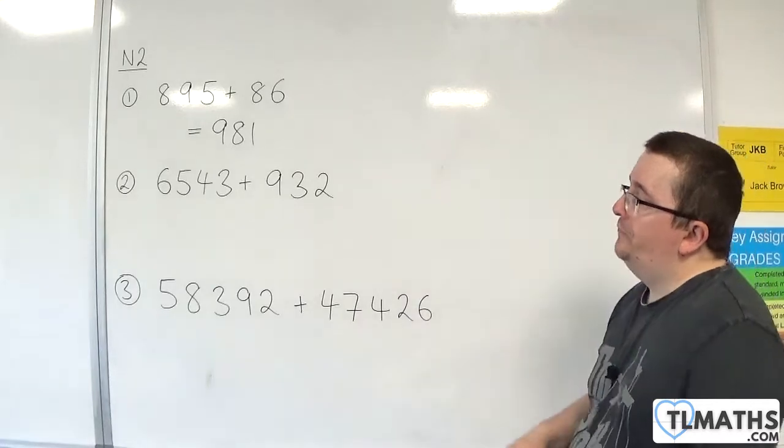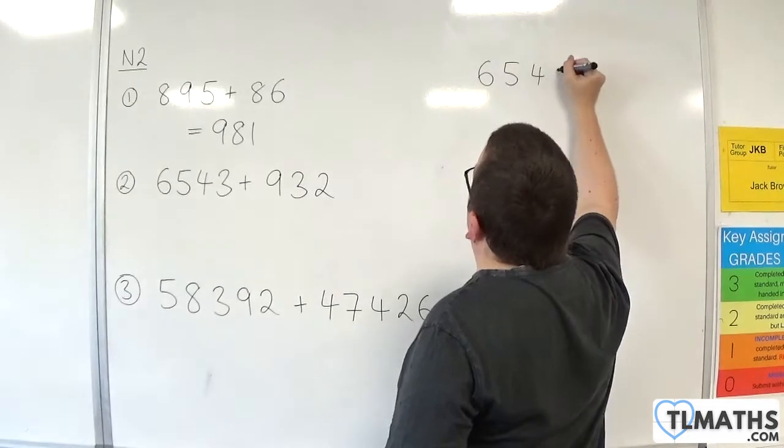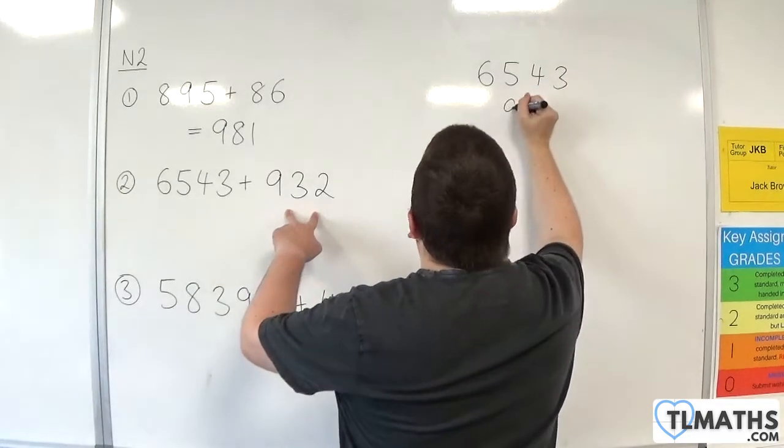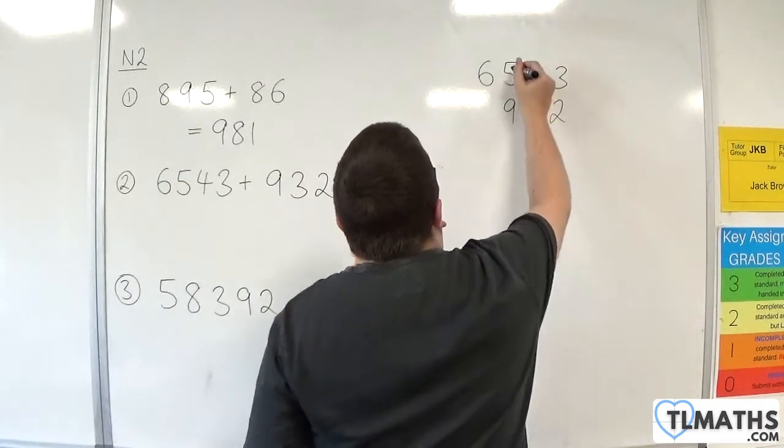Number 2. We have 6543 plus 932. So I'm matching up the units column, the tens, and the hundreds.